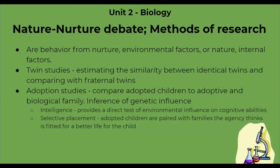Now let's move on to methods of research. Twin studies estimate the similarity between identical twins and compare this with fraternal twins. Adoption studies compare an adopted child to its adoptive parents and siblings, and also to its biological parents and siblings when available. This could infer genetic influence. In terms of adoption studies, intelligence provides a direct test of environmental influence on cognitive abilities.